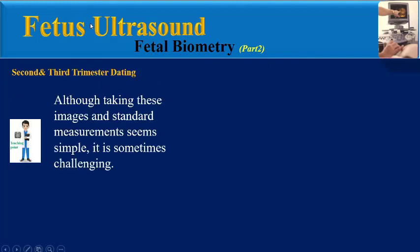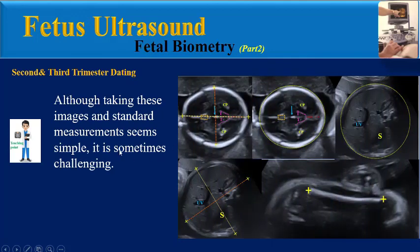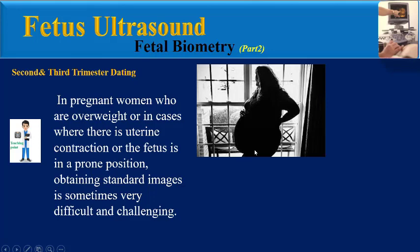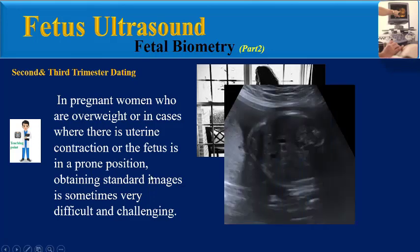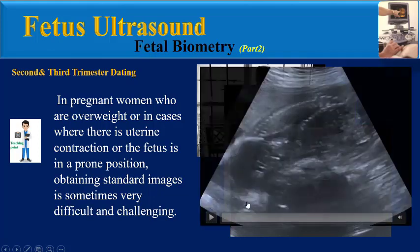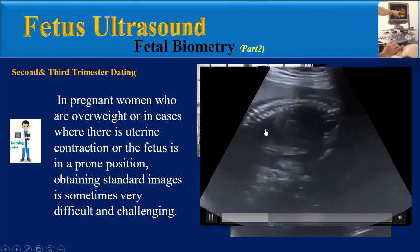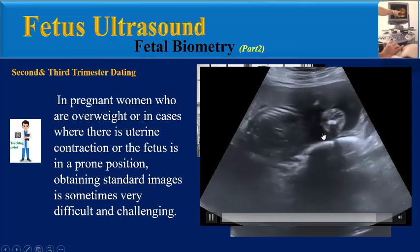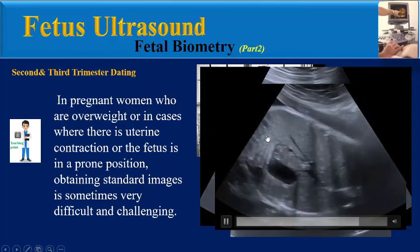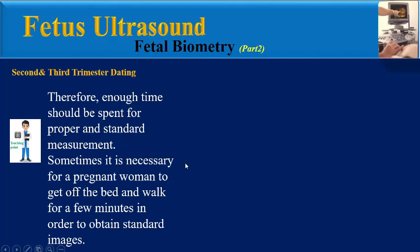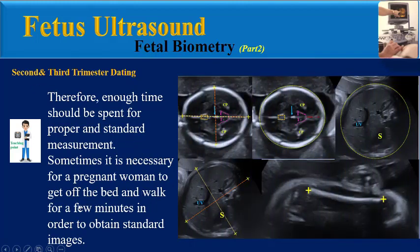Although taking these images and standard measurements seems simple, it is sometimes challenging in pregnant women who are overweight, or in cases of uterine contraction or a fetus in a prone position. As seen in the clips, obtaining a standard abdominal circumference view in a prone fetus or in a twin pregnancy can be very difficult. Therefore, enough time should be spent for proper measurements, and it is sometimes necessary for the pregnant woman to get off the bed and walk for a few minutes to obtain standard images.